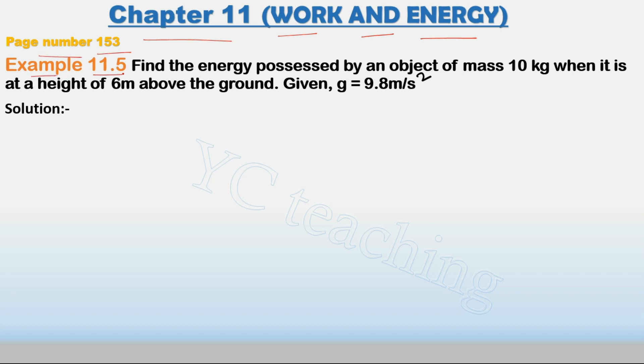Example 11.5: Find the energy possessed by an object of mass 10 kg when it is at a height of 6 meter above the ground. Given g is equal to 9.8 meter per second square.